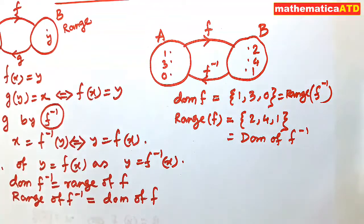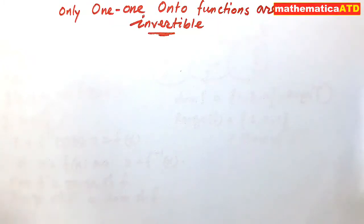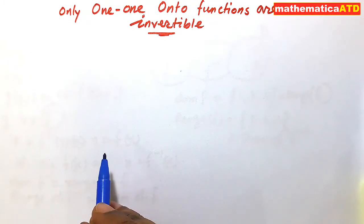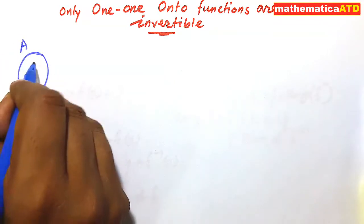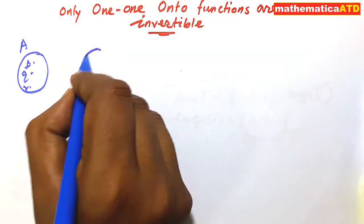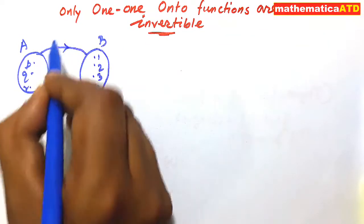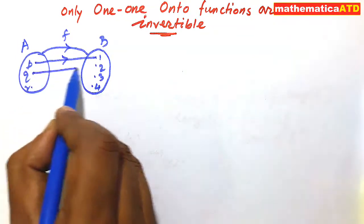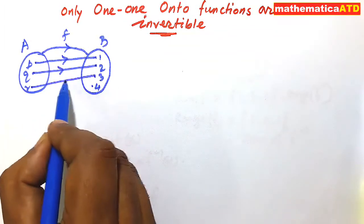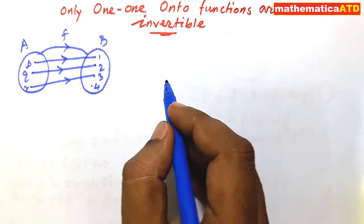This is a very important topic: only one-one and onto functions are invertible. For proof, let us consider two functions — namely one-one into, and many-one onto. The first one is one-one into. Say set A contains elements p, q, and r, and set B contains elements 1, 2, 3, and 4. There is a function f from A to B: p maps to 1, q maps to 2, and r maps to 3. So the range set is {1, 2, 3}.